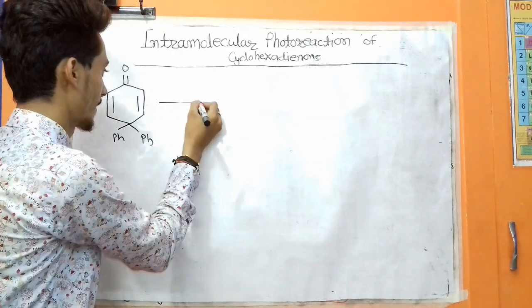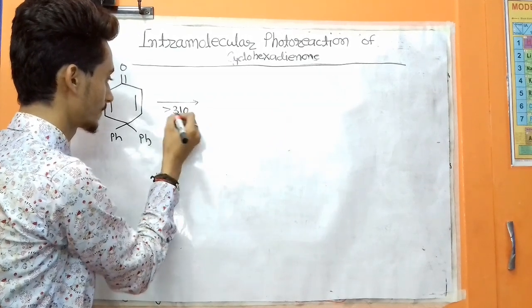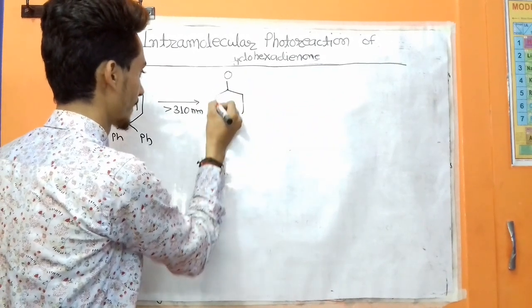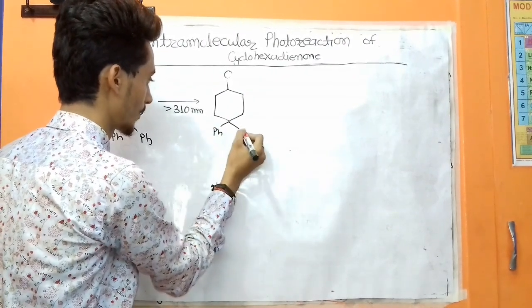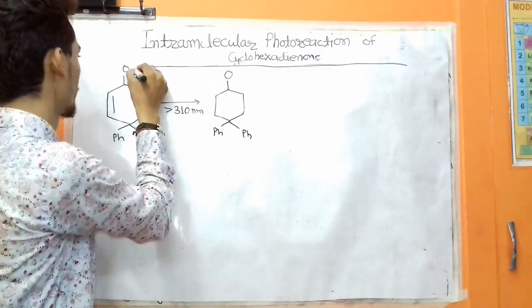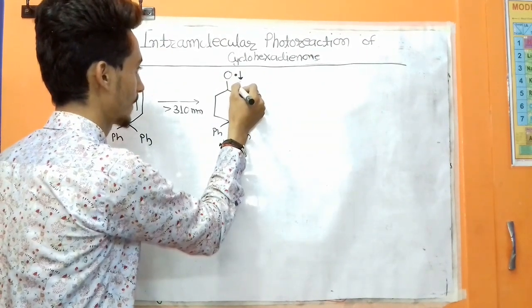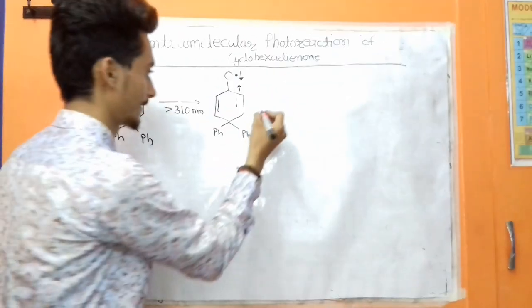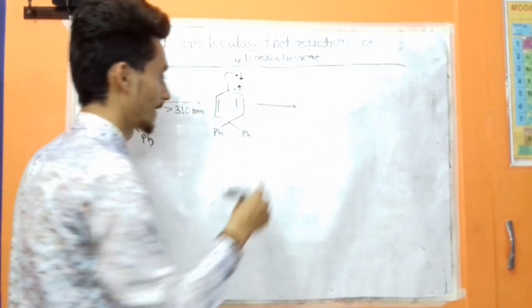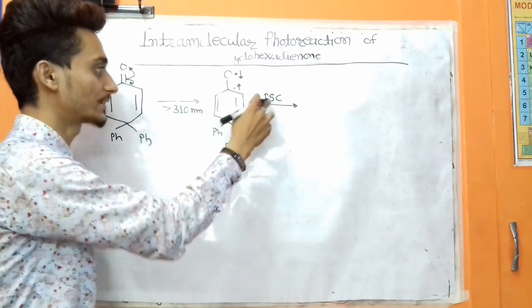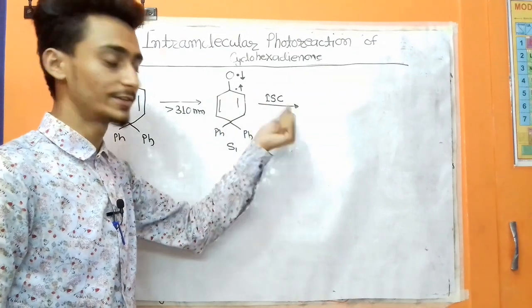This compound absorbs energy greater than 310 nm and gets excited, going from the ground state to the first excited state. In this first excited state, both electrons have opposite spins — this is without spin conversion, so this is the S1 state, the first excited state. This first excited state then drops to the triplet state by a physical process called internal system crossing.